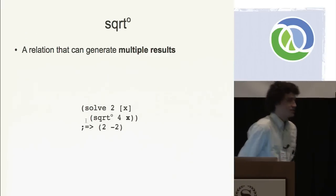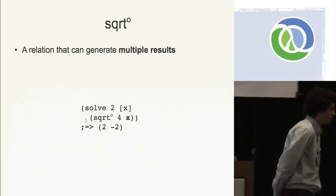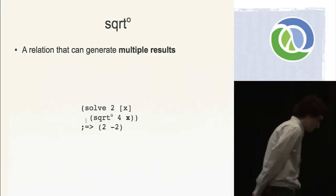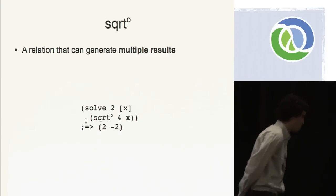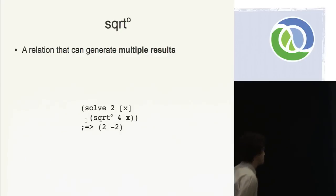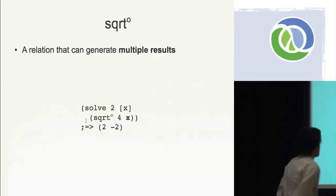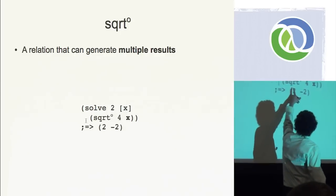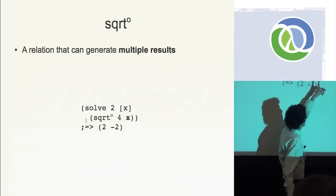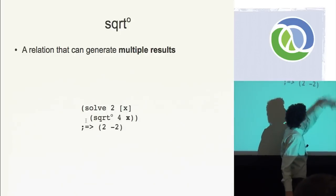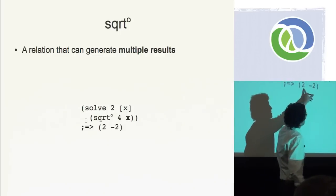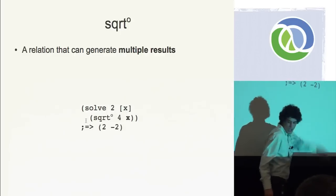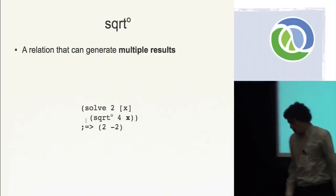Going back to our square root example, here's an example of a relation that will generate two different values. We say: give me two values of x such that the square root of four equals x. And we can see we get our two results.